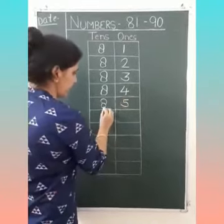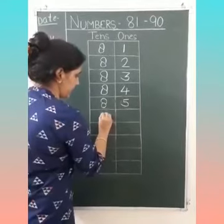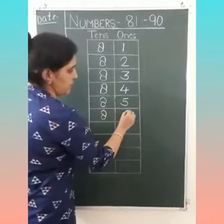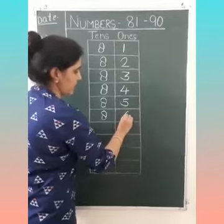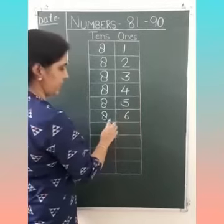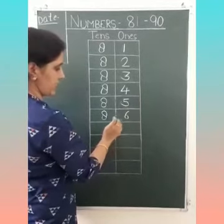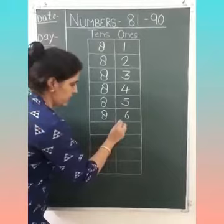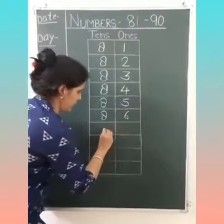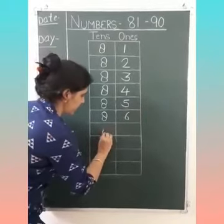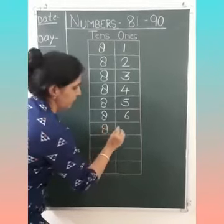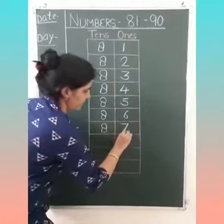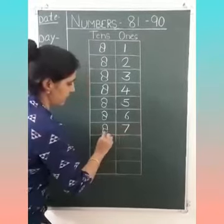At the 10s place: 8. At the 1s place: 6. 86. Next number is 87. At the 10s place: 8. At the 1s place: 7. 87.